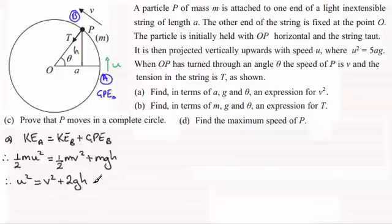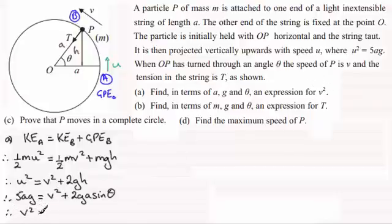Now what is H? Well by trigonometry from this right angle triangle here we know that this length O to P is the radius of the circle, so it's A. And so therefore H will be A sin θ. Now we know that U² is 5AG, so if we substitute that in, 5AG = V² + 2AG sin θ. And rearranging for V², we get V² = 5AG - 2AG sin θ. So you'll generally find that quite a lot of these questions where you've got motion in a vertical circle involve energy considerations.